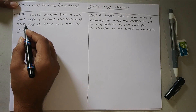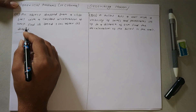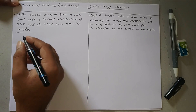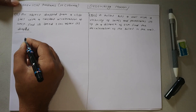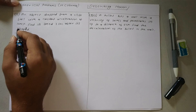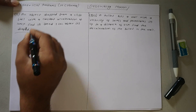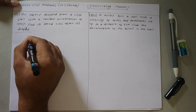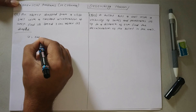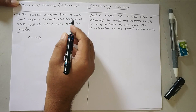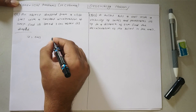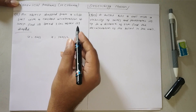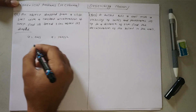An object dropped from a cliff follows a constant acceleration of 10 meters per second squared. We need to find its speed 2 seconds after it is dropped. Since the object is dropped, the initial velocity u is 0 meters per second. The acceleration a is 10 meters per second squared, and t is 2 seconds.